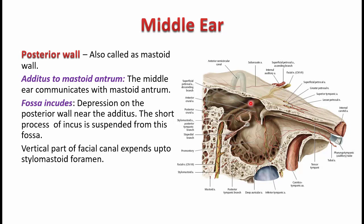On the medial wall of the middle ear cavity, you can see the impression of the oblique part of the facial canal. This is the stylomastoid branch visible here inside the facial canal — the vertical part of the facial canal.